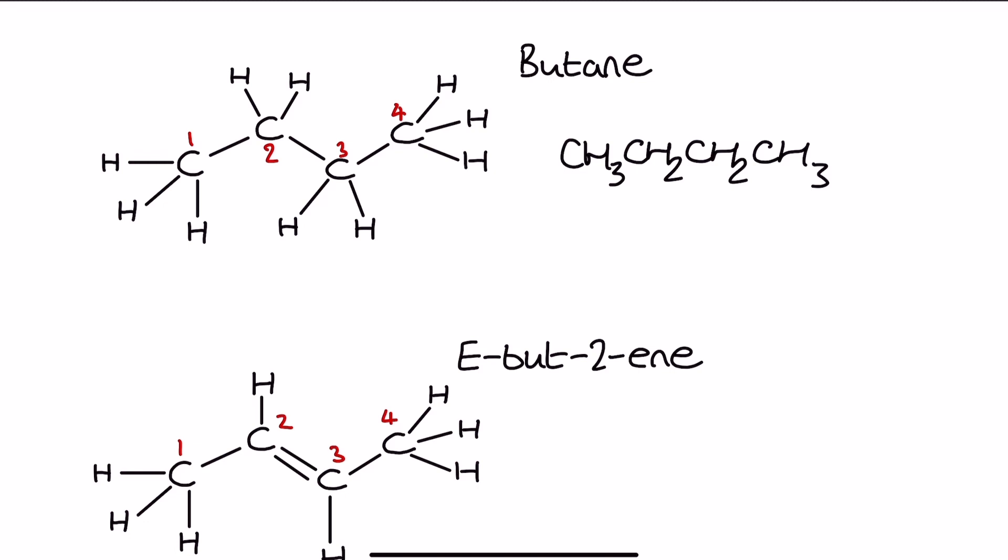If I number out the carbons we've got 1, 2, 3, and 4 as identified by the red numbers in the molecule on the left. Notice how after each carbon we list all three of the hydrogen bonded to it before moving on to the next carbon in the chain.